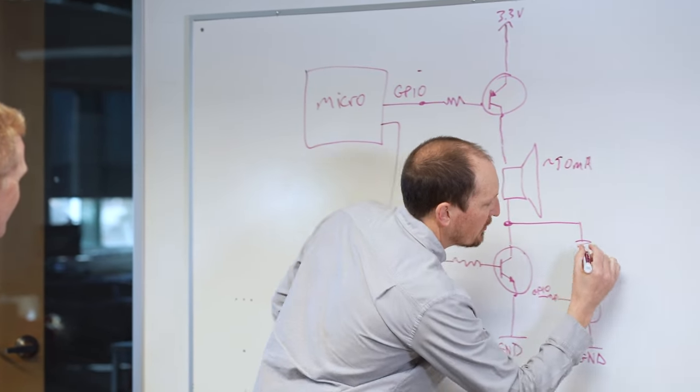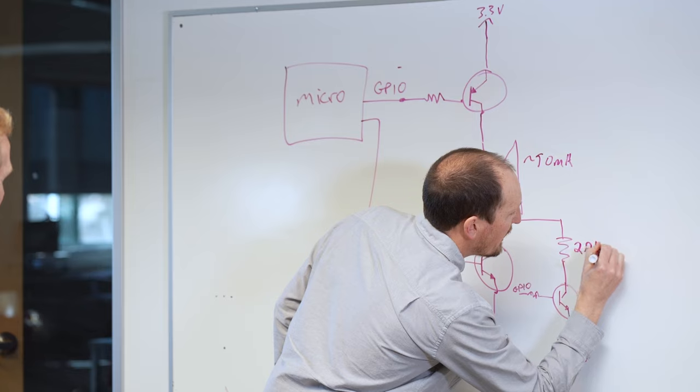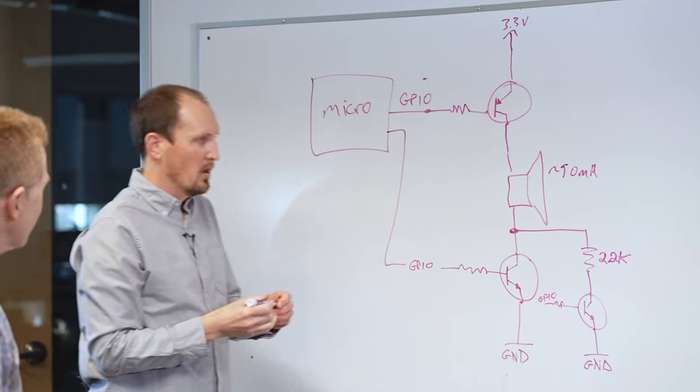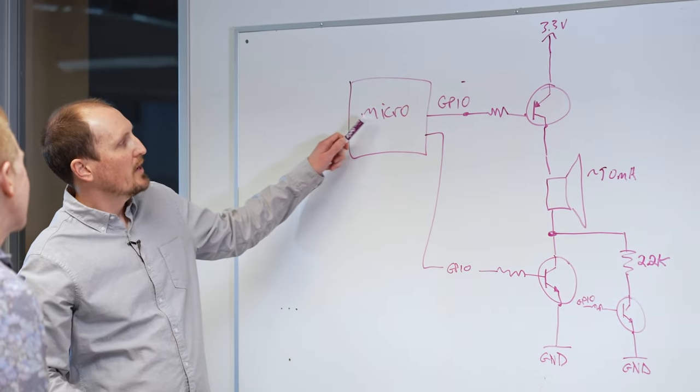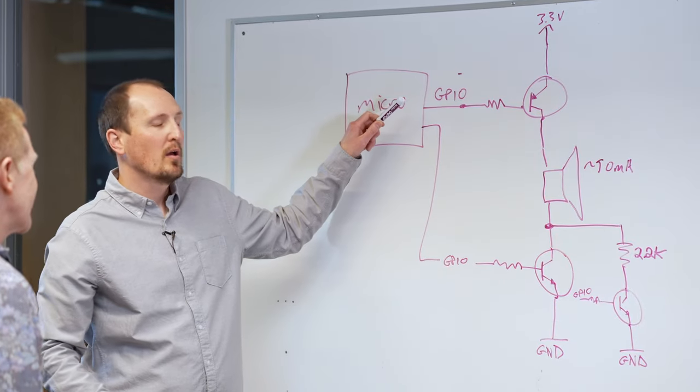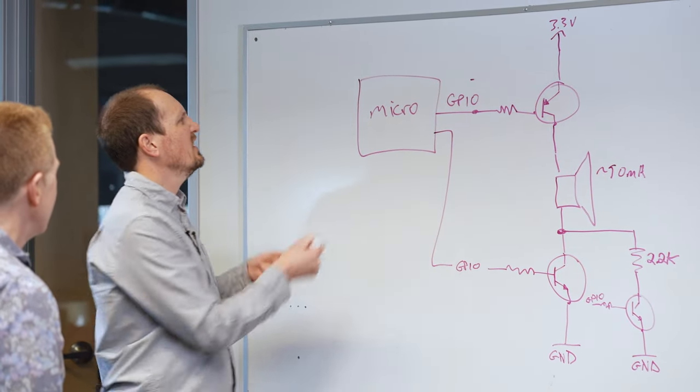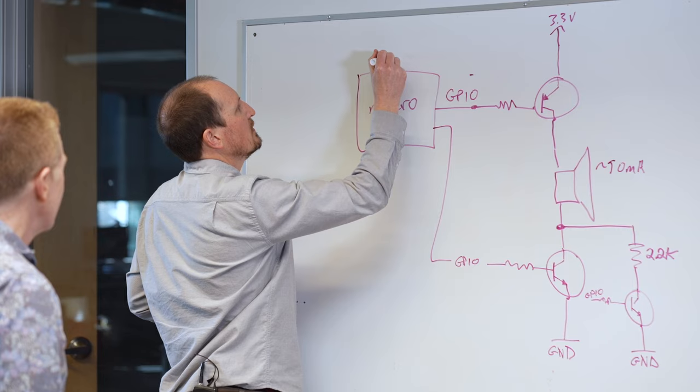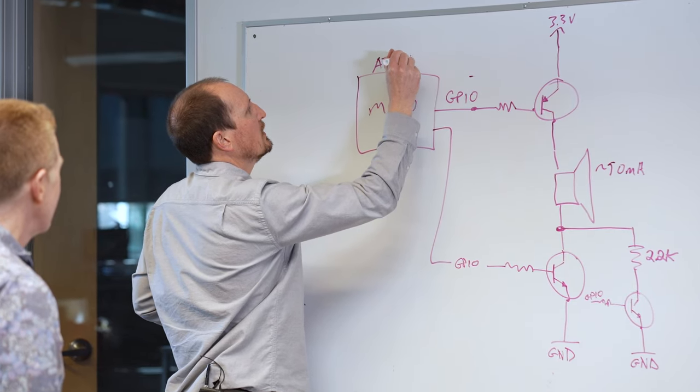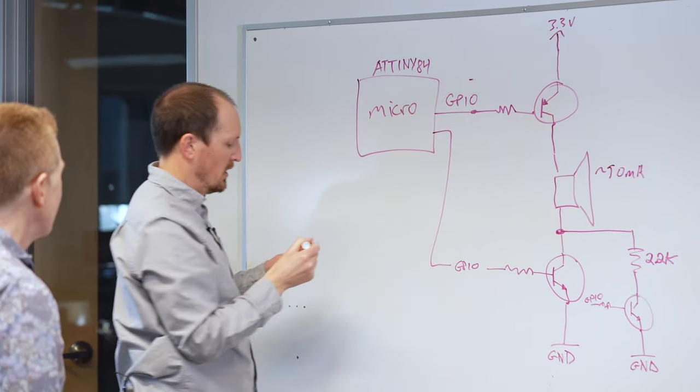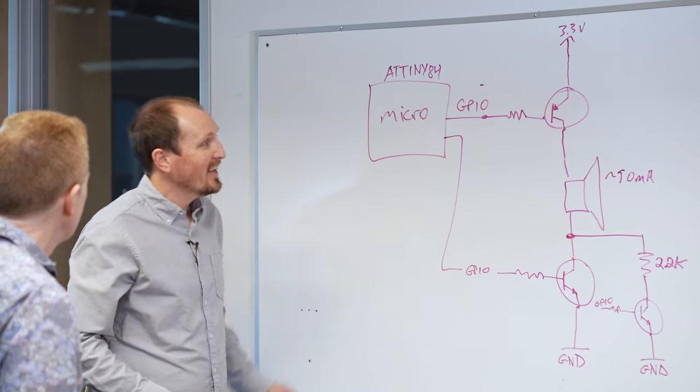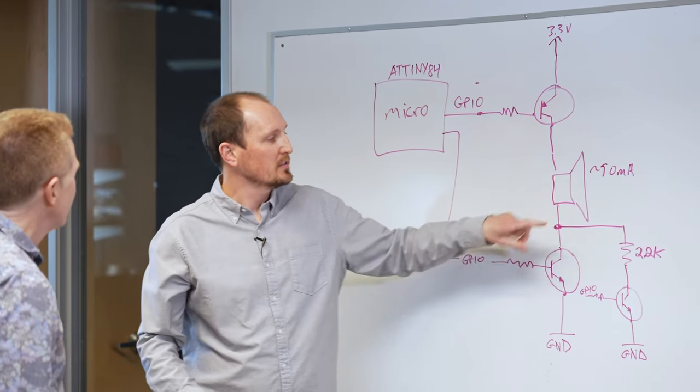So now I can decide which one do I want to connect to ground. So I want to go full volume to ground where I could turn this one off and turn this one on. And now I can put, I think on the board, we put a 2.2K. So now I have a volume control from the microcontroller. This is the ATtiny 84.